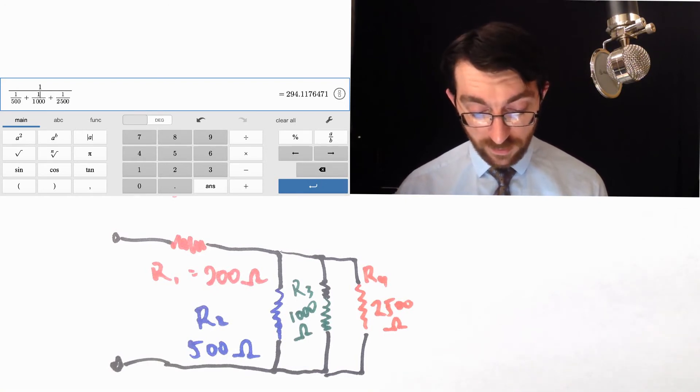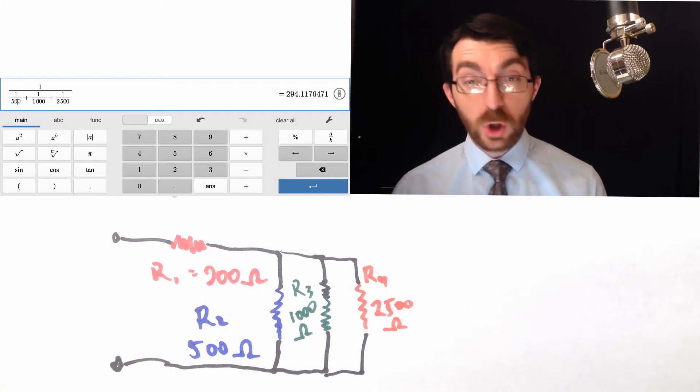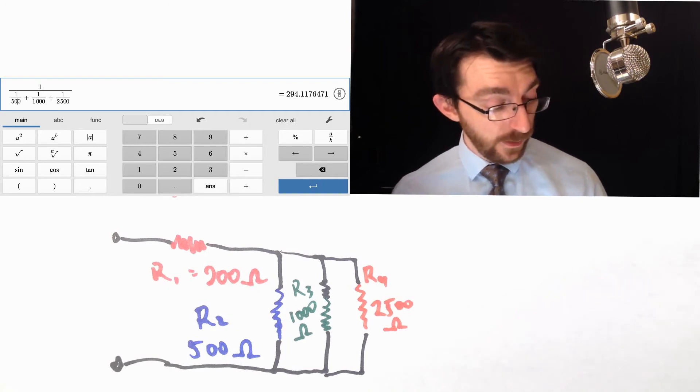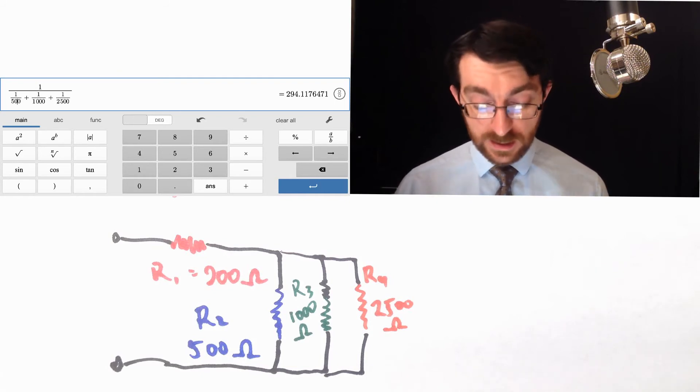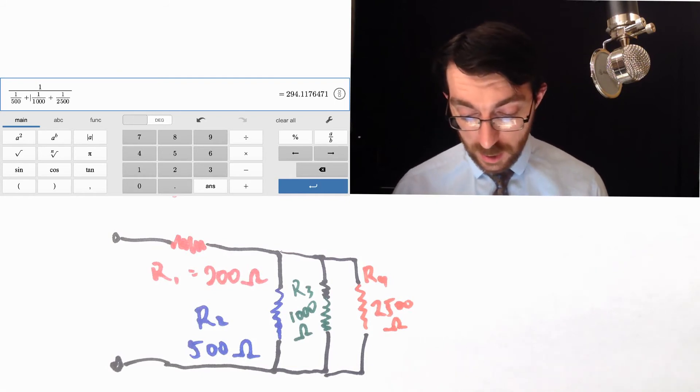The 2,500, the 1,000, and the 500, you would add them up straight up if they were in series, but since they're in parallel, you take the reciprocals, add those, and then take the reciprocal of that answer. Your answer is 294.1.